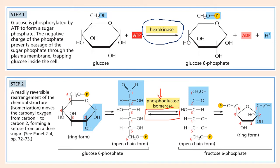Step 3 involves the phosphofructokinase enzyme. The new hydroxyl group on carbon 1 is phosphorylated by ATP in preparation for forming two three-carbon sugar phosphates. Importantly, the entry of sugars into glycolysis is controlled at this step — the regulation of the enzyme phosphofructokinase is critical. Note: the two ATP molecules required to start glycolysis are used in steps 1 and 3 respectively.